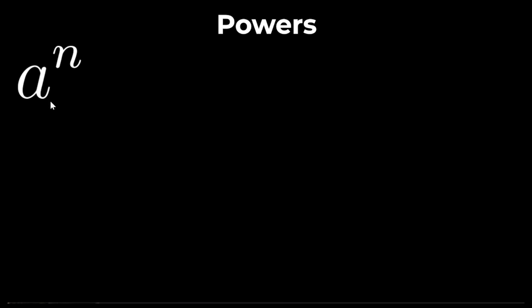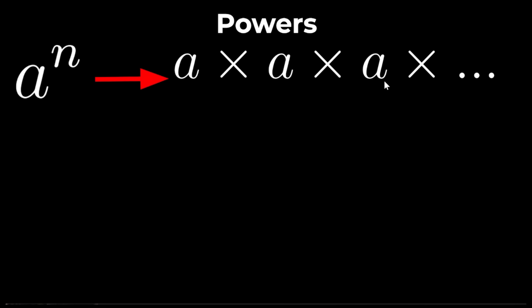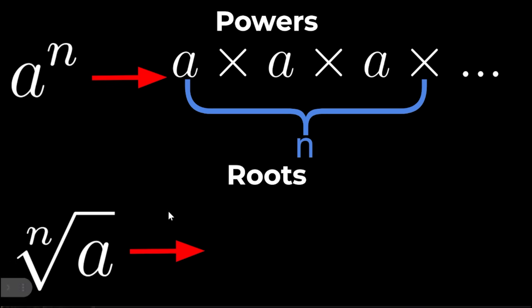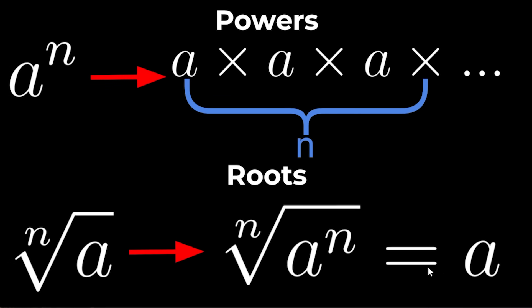Powers: The nth power of A is just A times A times A times A n times. And the nth root of A is the inverse of this so the nth root of the nth power of A is just A. Again same thing just backwards.